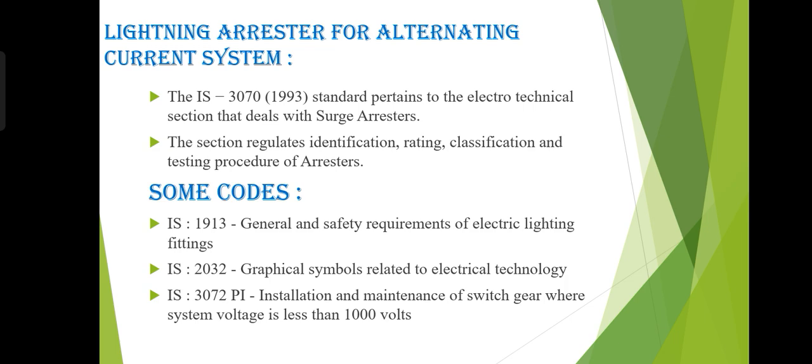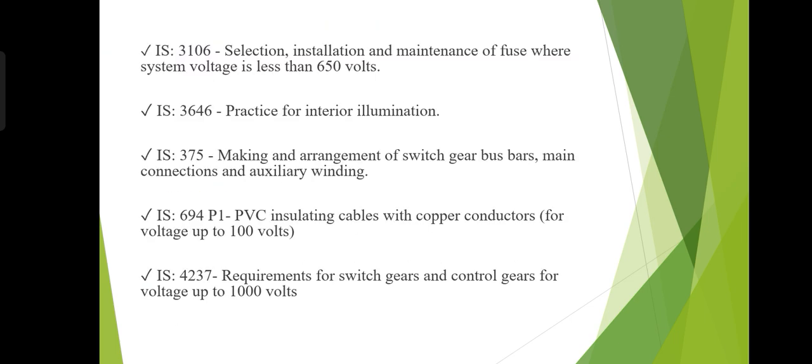Further codes include IEA 3072 for installation and maintenance of switchgear where system voltage is less than 1000 volts; IEA 3106 for selection, installation, and maintenance of fuses where system voltage is less than 650 volts; and IEA 3646 for the code of practice for interior illumination.